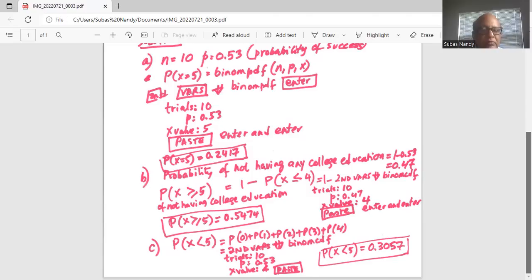So we will use the binom CDF. CDF stands for cumulative and it starts from zero up to certain number.